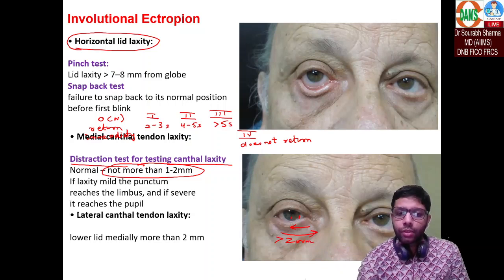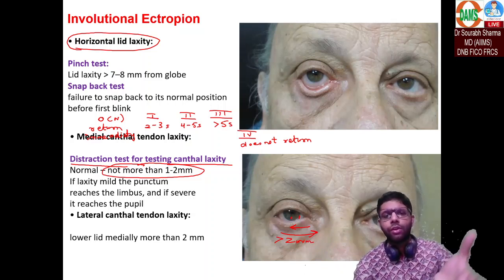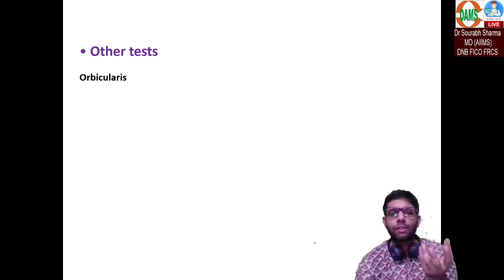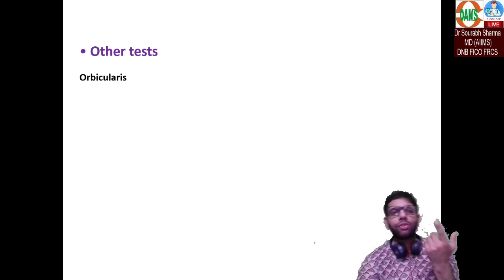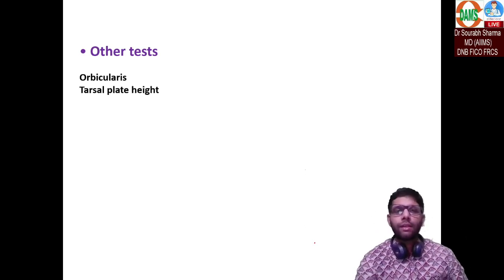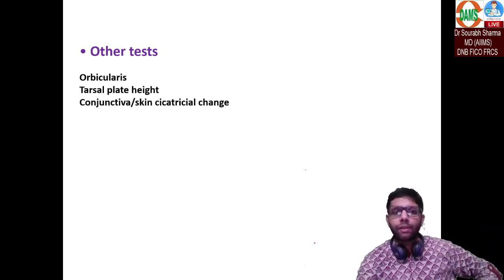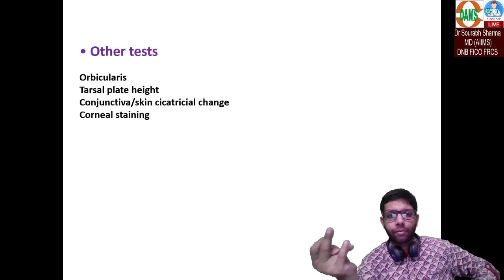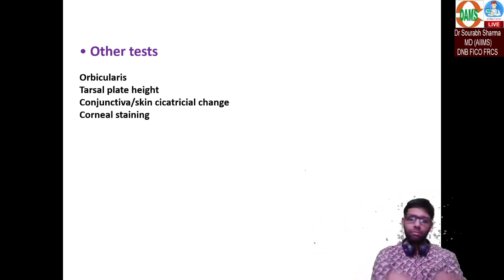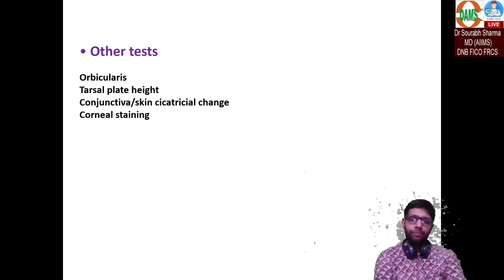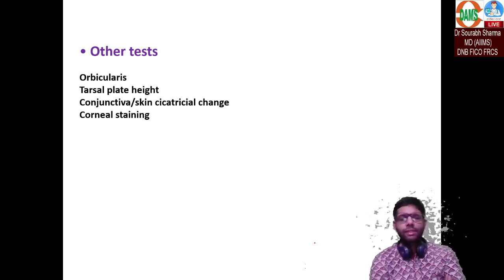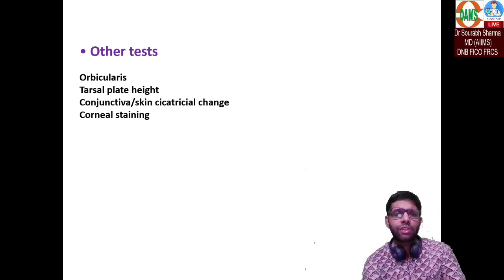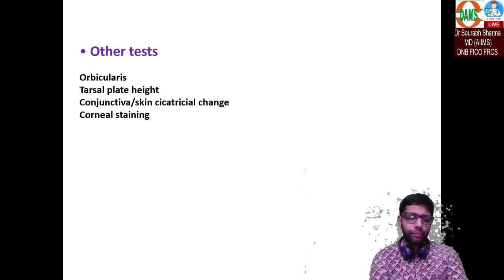Other tests can also be done — for example, orbicularis testing. In seventh nerve palsy, check the orbicularis, check for lagophthalmos, and examine the cornea and conjunctiva. Tarsal plate atrophy and tarsal plate height are also considerations. Check for conjunctival cicatricial changes and corneal staining if there is lagophthalmos in seventh nerve palsy. These help rule out other causes of ectropion.